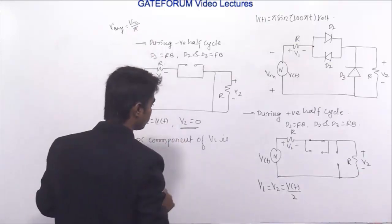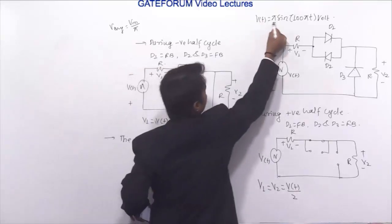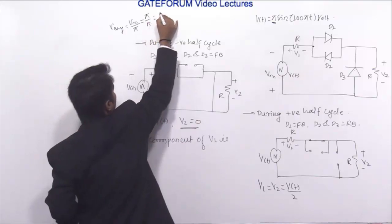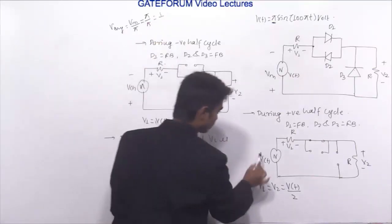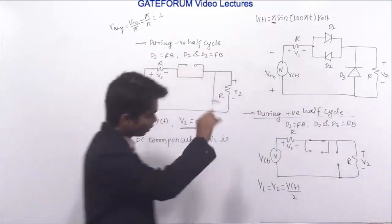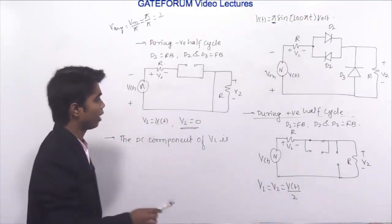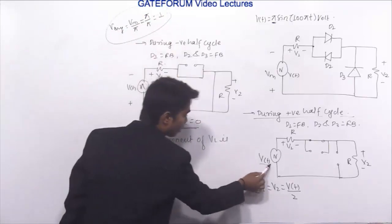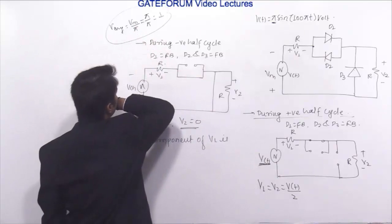The average value for a half wave rectifier is Vm/pi. If Vm equals pi, then the average will be pi/pi, which equals 1 volt. During the positive half cycle, only D1 is forward biased, so this circuit resembles a half wave rectifier, giving V_average = Vm/pi = 1 volt.